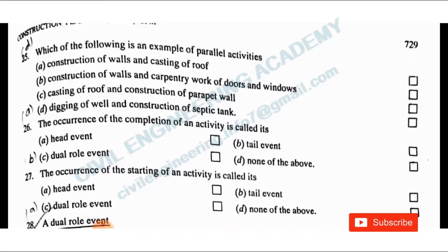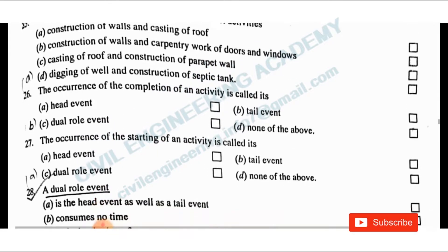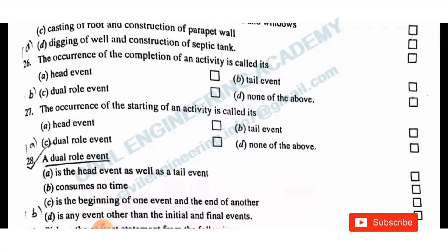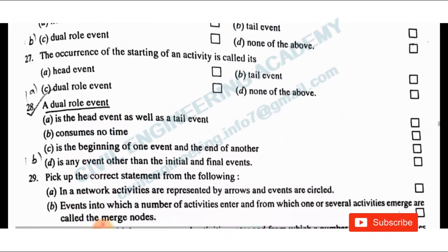Question 26: The occurrence of the completion of activities is called a head event. The occurrence of the starting of an activity is called a tail event. A dual role event is both the head event as well as the tail event — it consumes no time, is the beginning of one event and the end of another event.